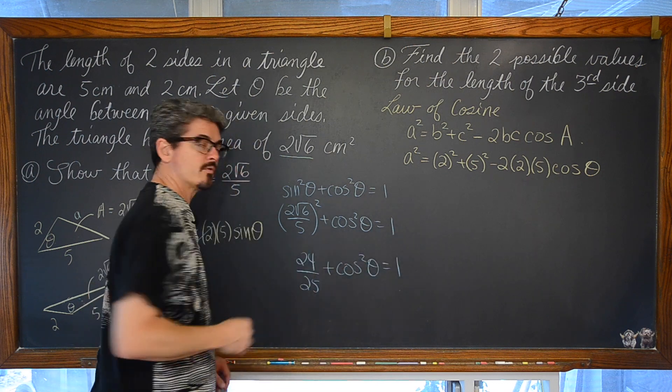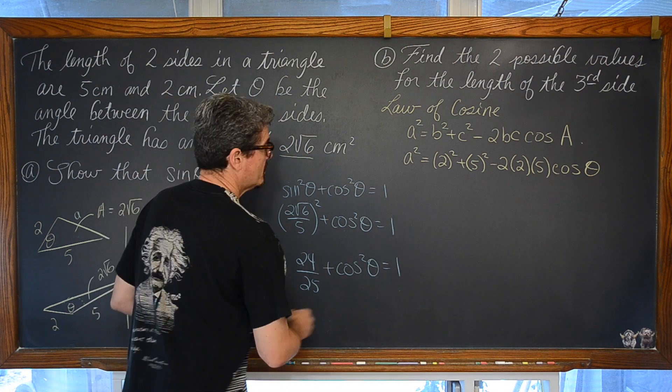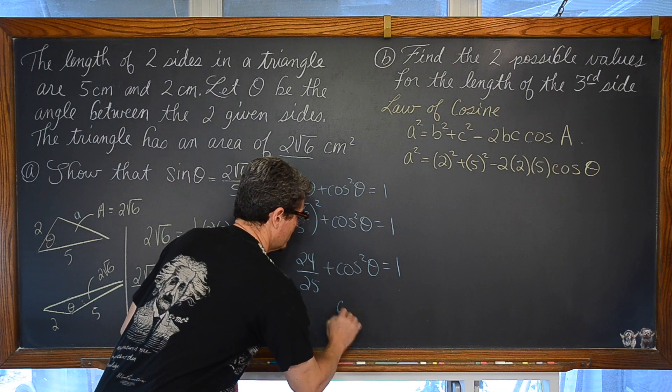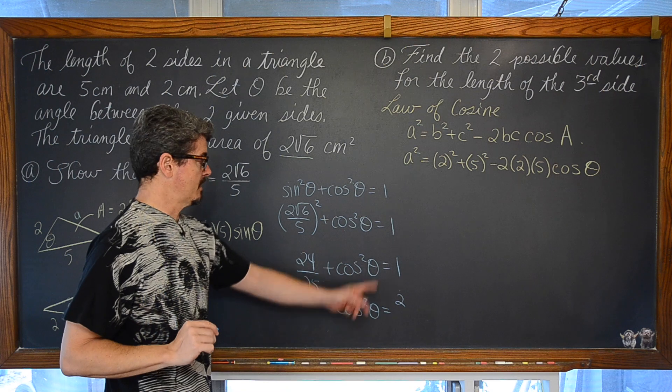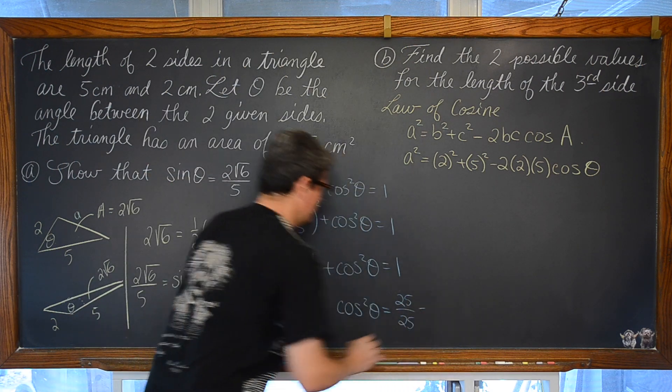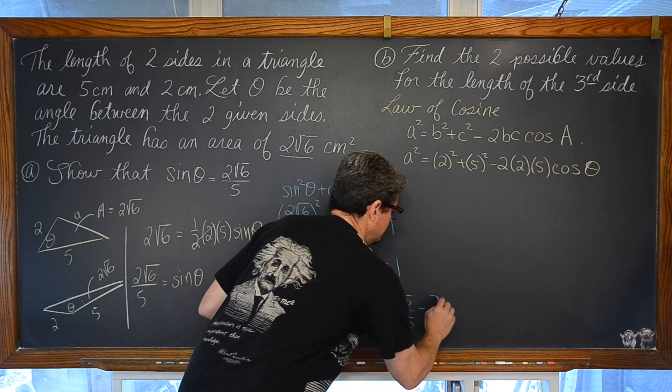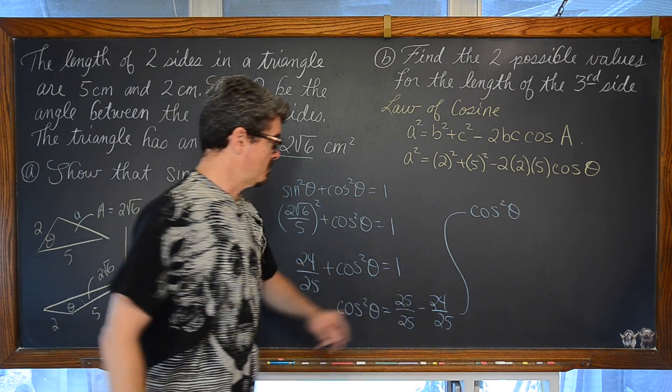Subtracting that 24 over 25 over to the other side, we have, and I'll have to erase this to have more room, but we have cosine squared theta is equal to, let's find common denominators, the 1 is going to be 25 over 25 minus 24 over 25. Cosine squared theta then is equal to 1 over 25.